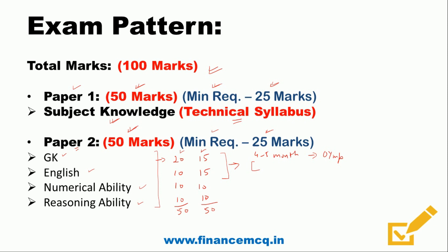For Numerical Ability and Reasoning, these are repetitive topics asked in almost all competitive exams. You can buy a book on numerical ability or reasoning and prepare easy to medium category questions, since this is not a CAT-level exam. Difficult questions from these topics are not expected, so easy to medium category questions will be sufficient. Prepare accordingly for Paper 2.